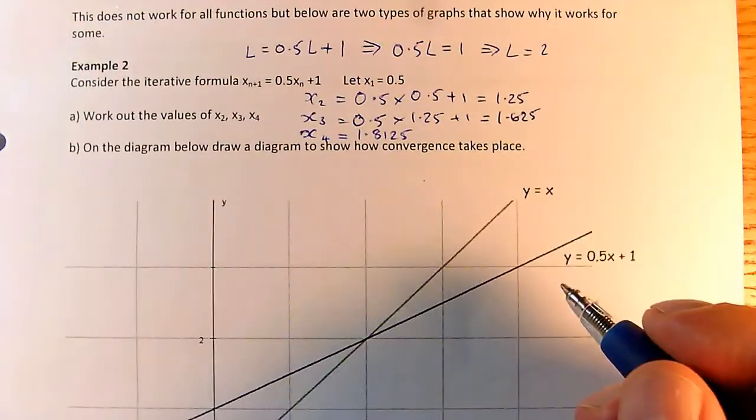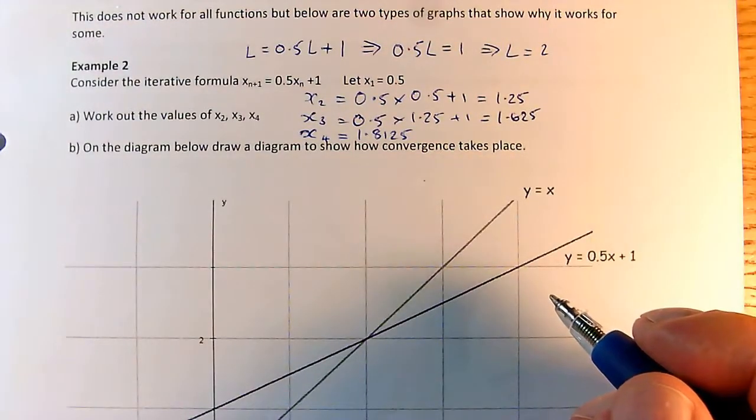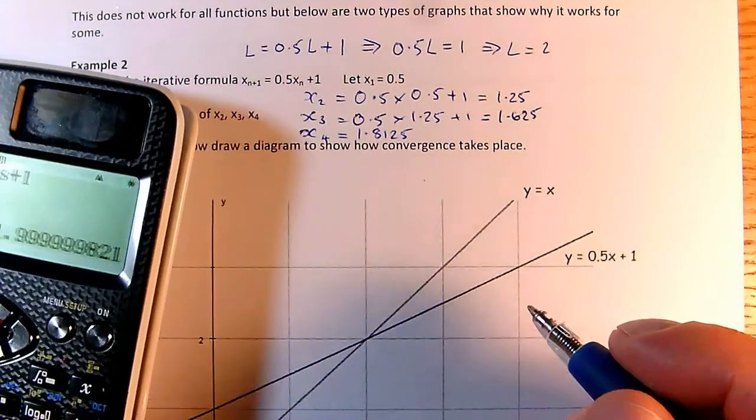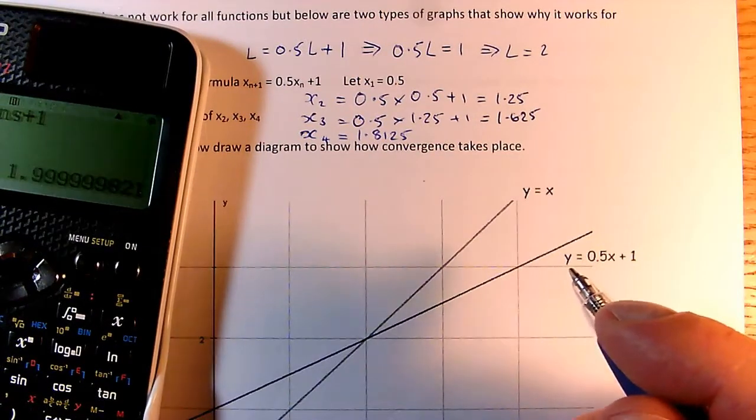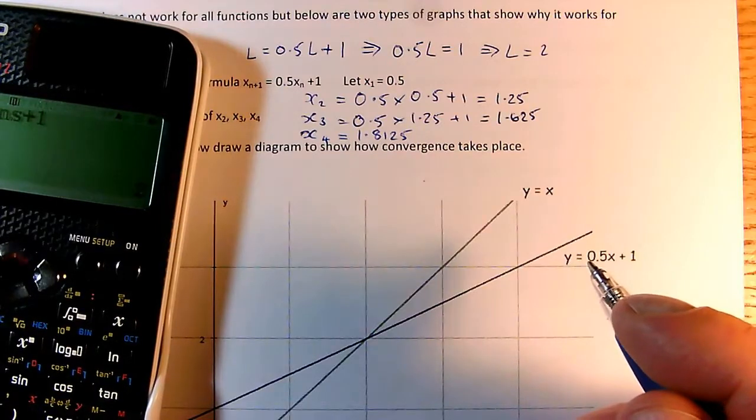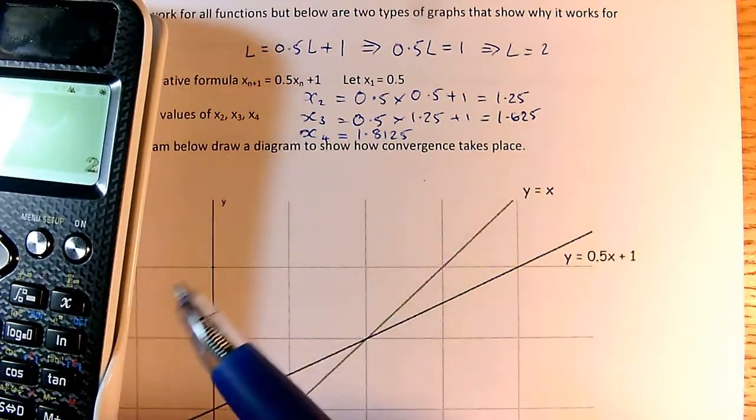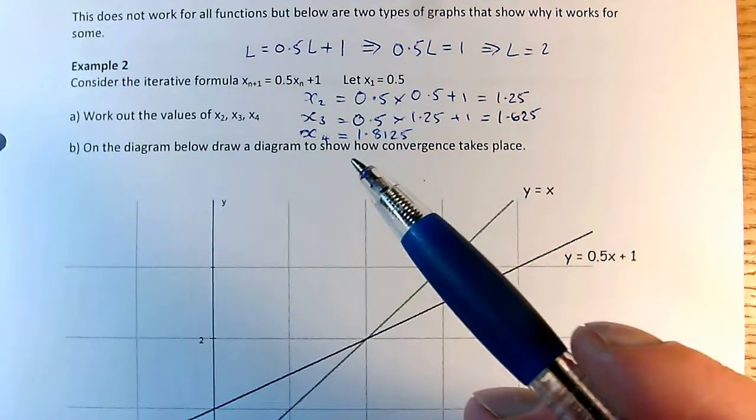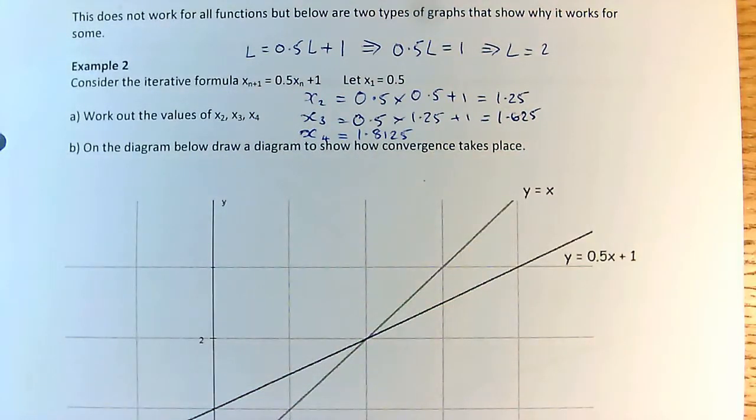And that's pretty much what we saw on the calculator. The calculator values we're getting, if I keep pressing equals, the calculator will no longer be able to tell the difference between the answer and 2 if I press equals often enough. The calculator hasn't genuinely got to 2. It's just got to a decimal that's so close to 2 it can't display the difference. So, why is this converging?